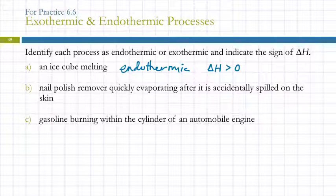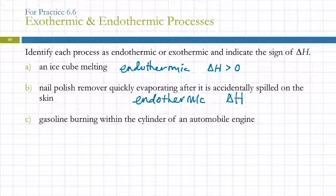Nail polish remover quickly evaporating after it's accidentally spilled on the skin. So you spill some nail polish remover on your skin. It feels cold, right? Is that exothermic or endothermic? We're talking about the nail polish remover as the system. Endothermic. It is absorbing energy from your skin. Your skin is experiencing an exothermic process, but the nail polish remover evaporating is endothermic. So what's delta H? Positive. So delta H is positive, greater than zero.